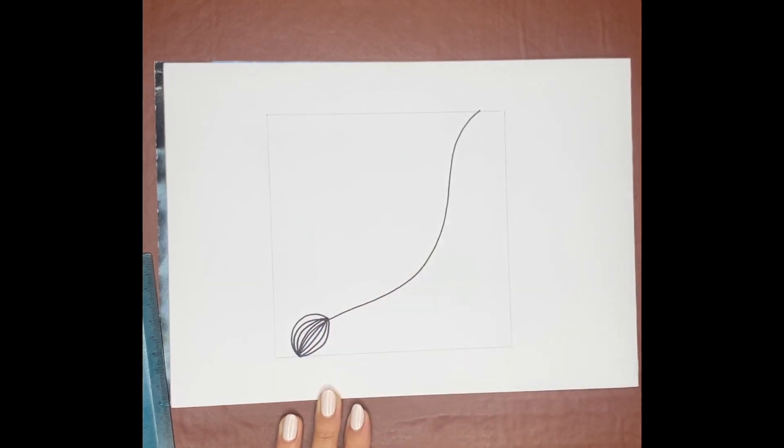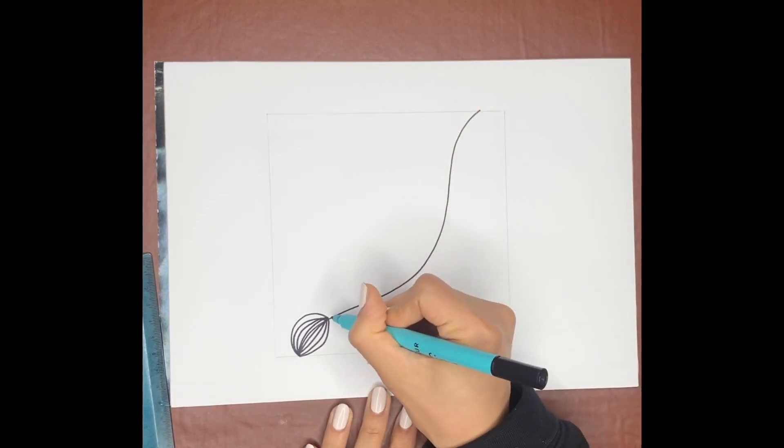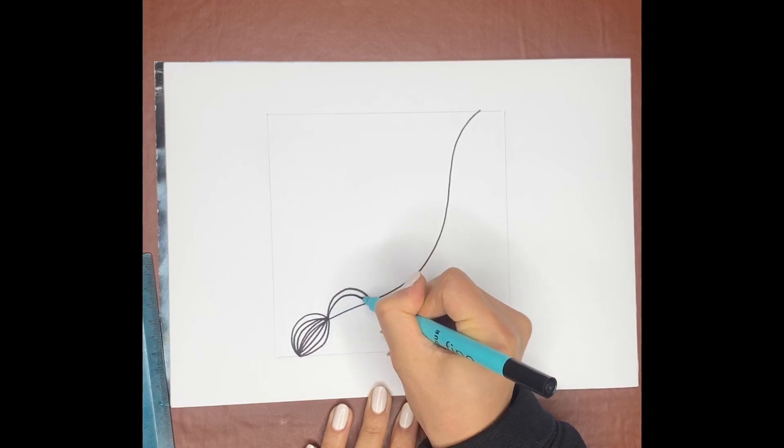So keep going with that. You do exactly the same thing to the other side. And then what you want to do is you want to go all the way up. It kind of looks like a string.